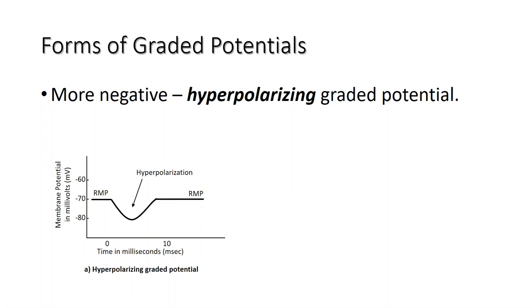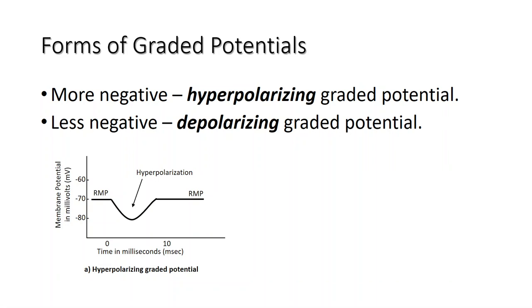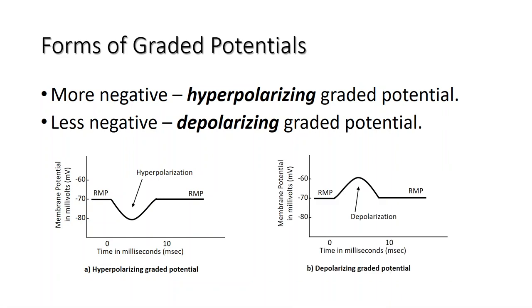Hyperpolarizing graded potentials can be caused by potassium ion leaving the cell or chloride ion entering the cell down their electrochemical gradients. When the response makes the membrane less negative on the inside, it is termed a depolarizing graded potential. Depolarizing graded potentials are often the result of sodium ion or calcium ion entering the cell down their electrochemical gradients.